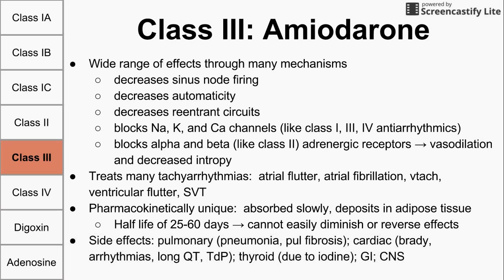Amiodarone's side effects include pulmonary effects such as pneumonia and pulmonary fibrosis. Cardiac effects include bradycardia, since it decreases sinus node firing, automaticity, and reentry circuits. It can also cause long QT syndrome, which leads to torsades de pointes. It can cause thyroid problems because the molecule contains a large iodine atom. It can also cause GI distress and central nervous system distress.